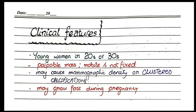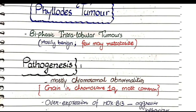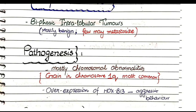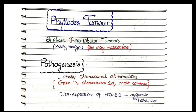Now let's discuss phyllodes tumor. Like fibroadenomas, phyllodes tumors are biphasic — both stromal and epithelial components grow. However, they are mostly benign but a few may metastasize, which is a key difference from fibroadenomas, which are almost always benign. Pathogenetically, phyllodes tumors are caused by chromosomal abnormalities, most commonly gain of chromosome 1q. Overexpression of the transcription factor HOXB13 is also implicated and results in more aggressive tumor behavior.